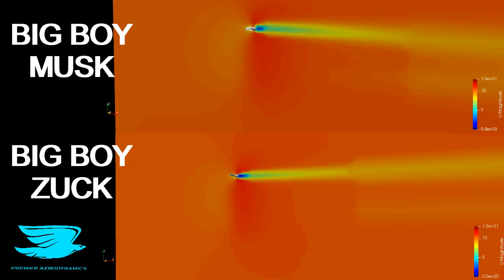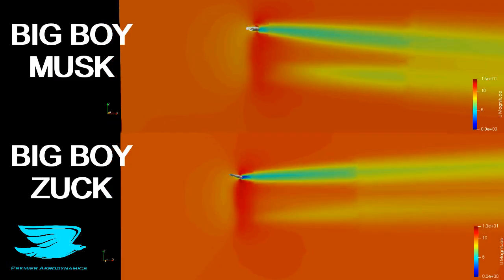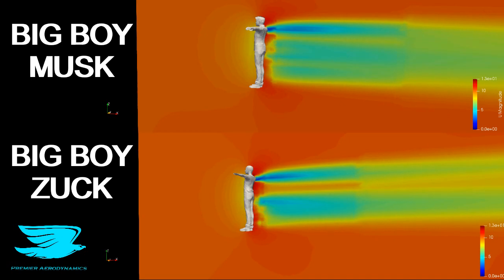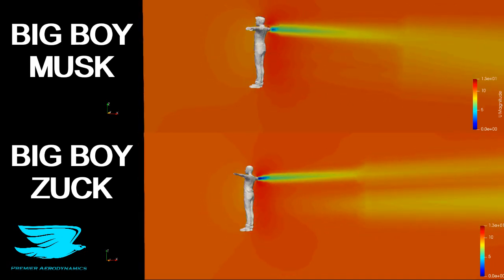The wake from Musk's arms is not only a bit smaller, but it actually goes down at an angle. This tells us that the lift coefficient of Musk is 0.2, whereas Zuckerberg's is only -0.016, almost nothing. This means Musk is producing more lift than Zuckerberg.